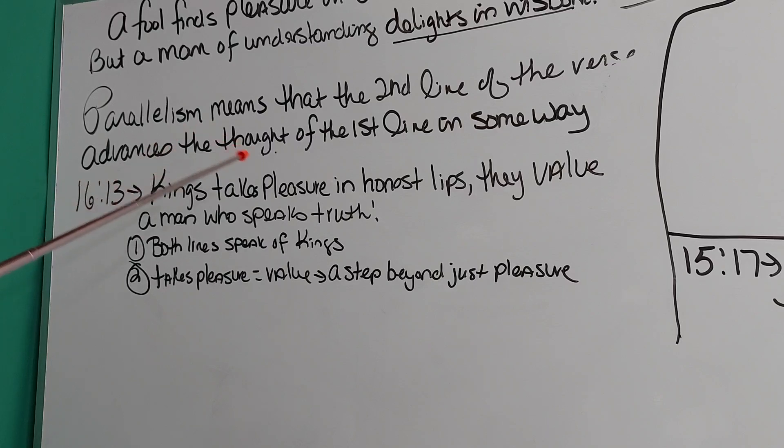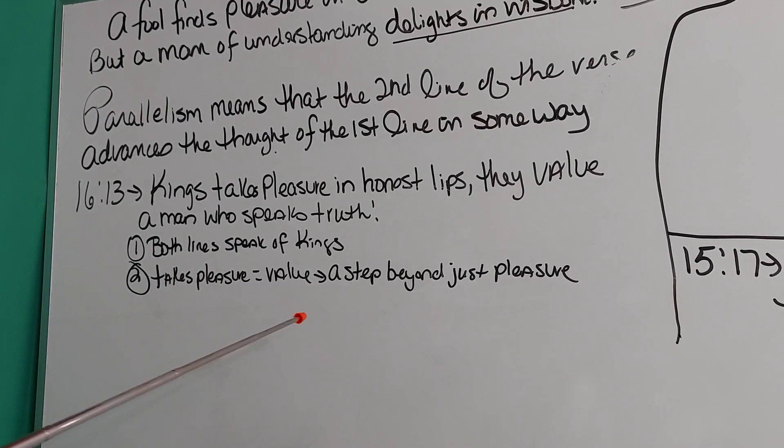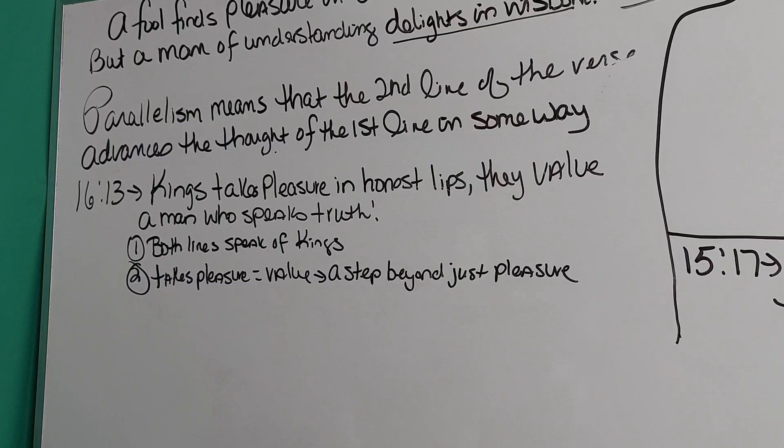They've taken pleasure in it must mean something to them, right? So, taking pleasure is parallel to value. But, valuing something is a step beyond just taking pleasure in it. To value something at the same time is a step beyond just pleasure. You can see how much kings take pleasure in honest lips. They value a man who speaks truth that means so much more to them in line two than line one.